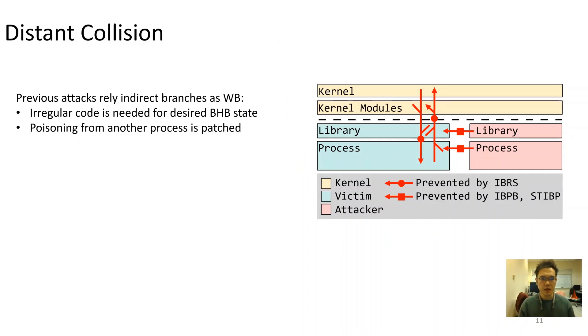Previous attacks rely on indirect branches as the writer branch. To inject a malicious branch target, attackers need to execute sequence of taken-non-taken branches to maintain a desired BHB state. Such irregular code layout can be easily detected as malicious if it's in victim process as a Trojan attack. Since poisoning from another process is also fixed by the current mitigations, indirect writer branches are not useful in this scenario.